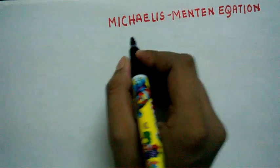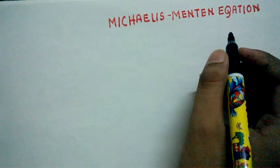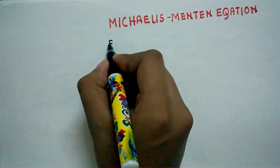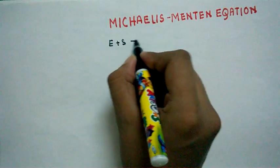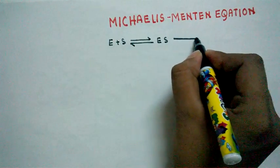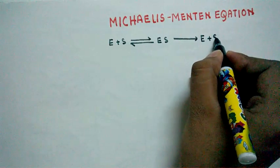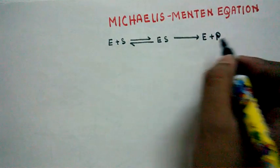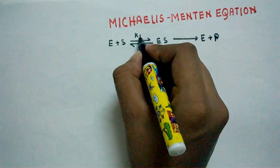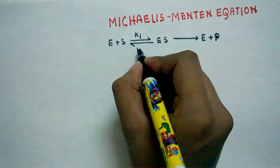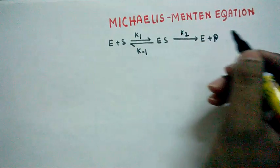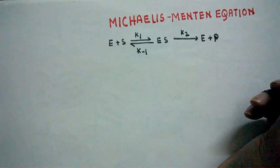In this video I'm going to derive the Michaelis-Menten equation. Let's start with the enzyme-substrate reaction: enzyme plus substrate forms an enzyme-substrate complex, which then forms enzyme plus product. For the forward step, the rate constant is k1; for the reverse step, k-minus-1; and for the second step, k2.